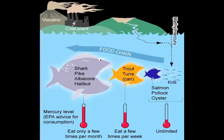Women who are pregnant, nursing, or want to become pregnant, as well as children, should be especially cautious when eating fish and shellfish. Exposure to mercury can affect the human nervous system and harm the brain, heart, kidneys, lungs, and immune system.